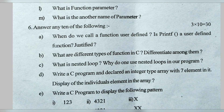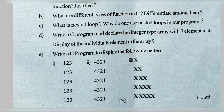Write a C program to declare an integer type array with seven elements and display the individual elements. You can write: int arr[7]; and to initialize, add equals and within curly braces give any seven values. For displaying individual items you can write printf with arr[0], and similarly for the rest — I will write it on the screen so you can see it from there.